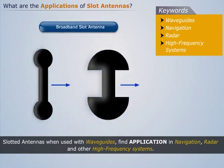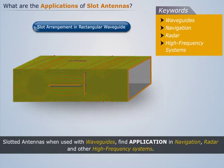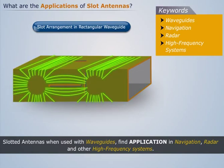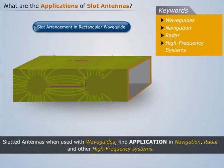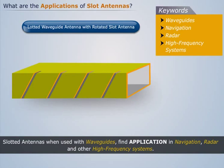They can replace dipoles, especially in cases where perpendicular polarization to the longitudinal extension of the radiator is required. The position, shape, and orientation of the slots will determine how they radiate, thus being useful in designing antenna arrays. The waveguide is used as the transmission line to feed the elements, and several slot radiators in a waveguide form a group antenna.